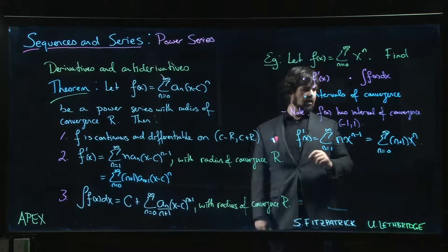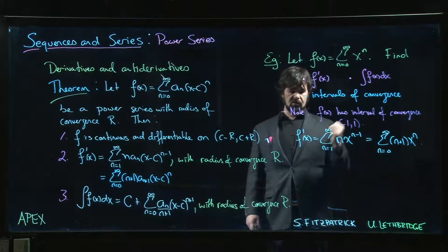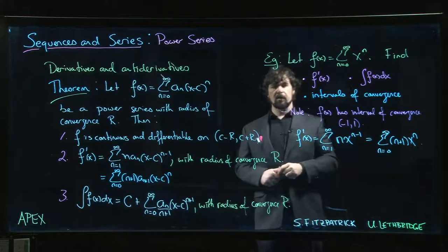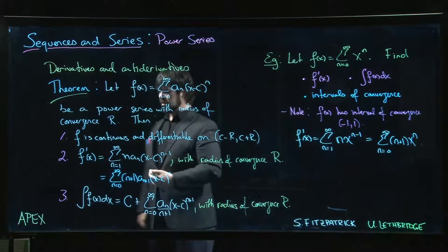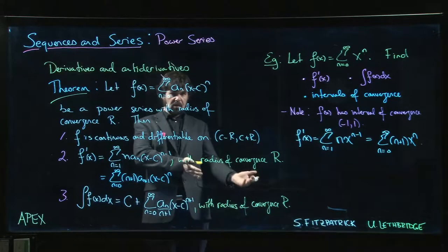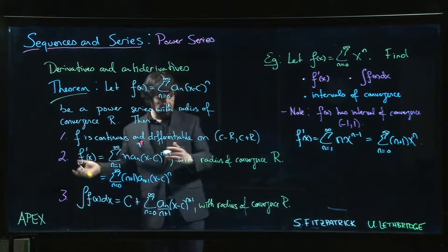So our intuition is correct—that is the right interval of convergence. Now what about antiderivatives? Sometimes you gain a bit with antiderivatives. Makes sense: if you sometimes lose a little bit with derivatives, you should gain a little bit with antiderivatives.